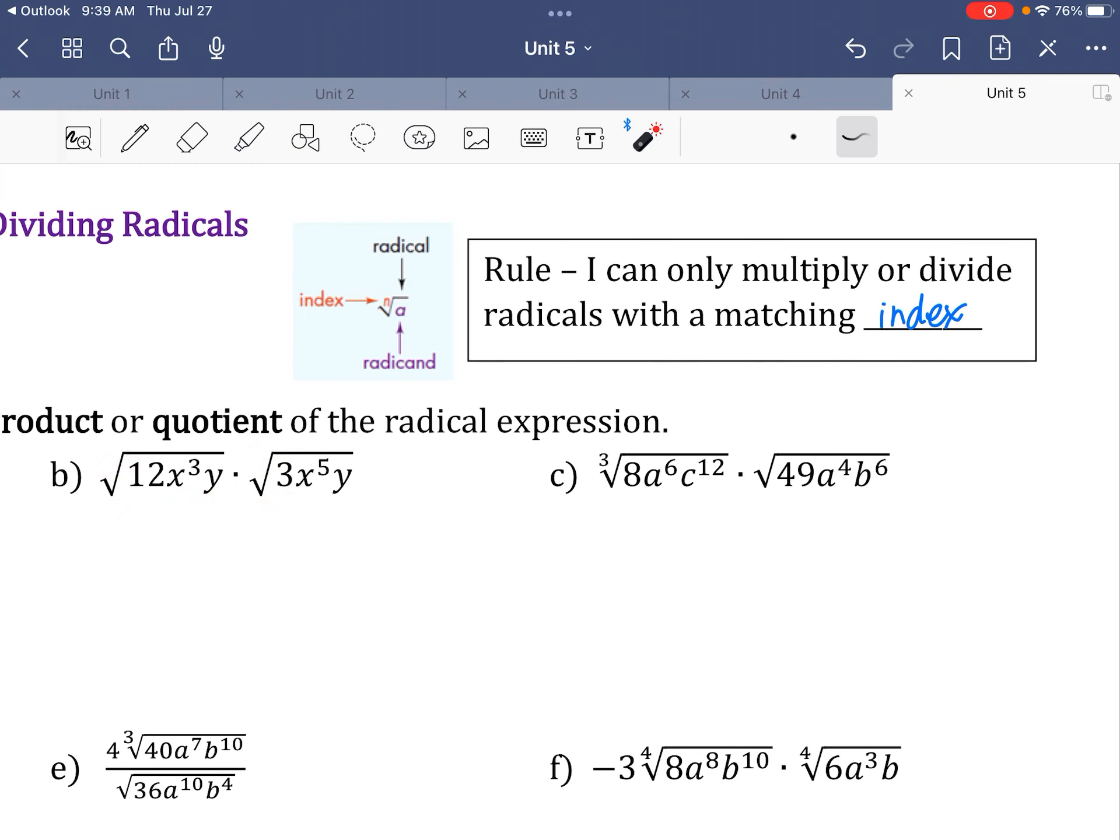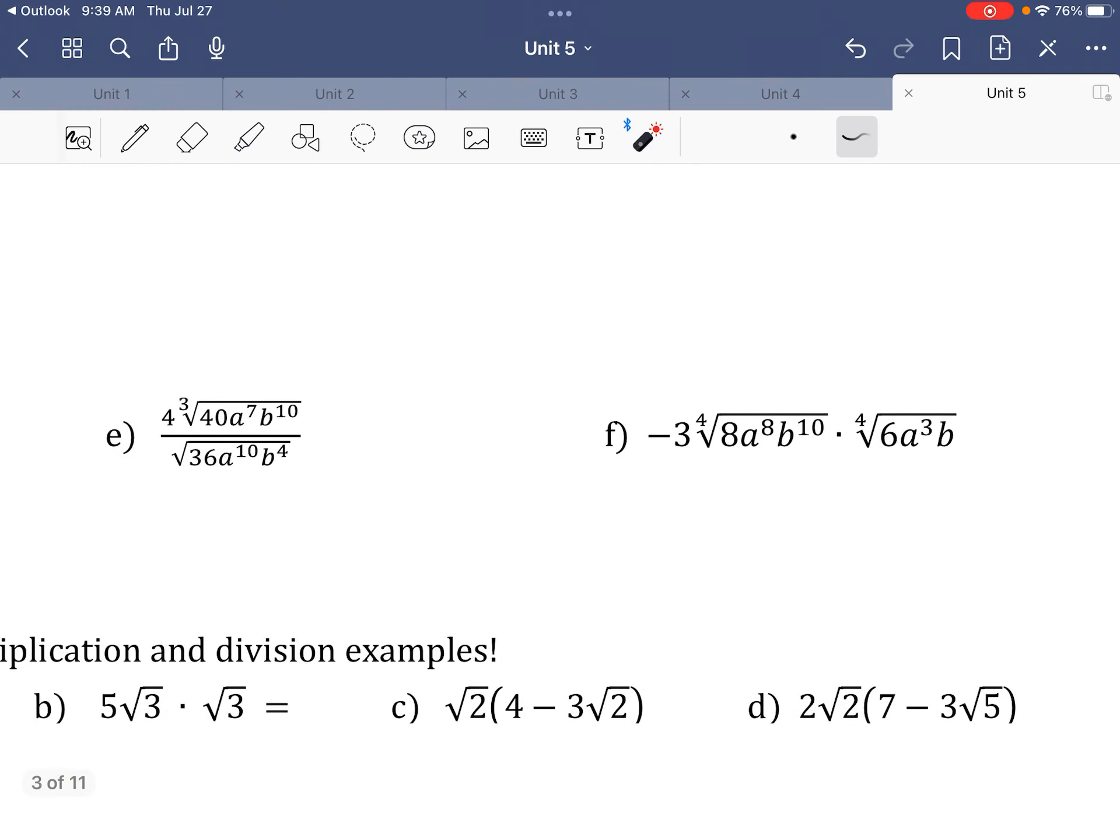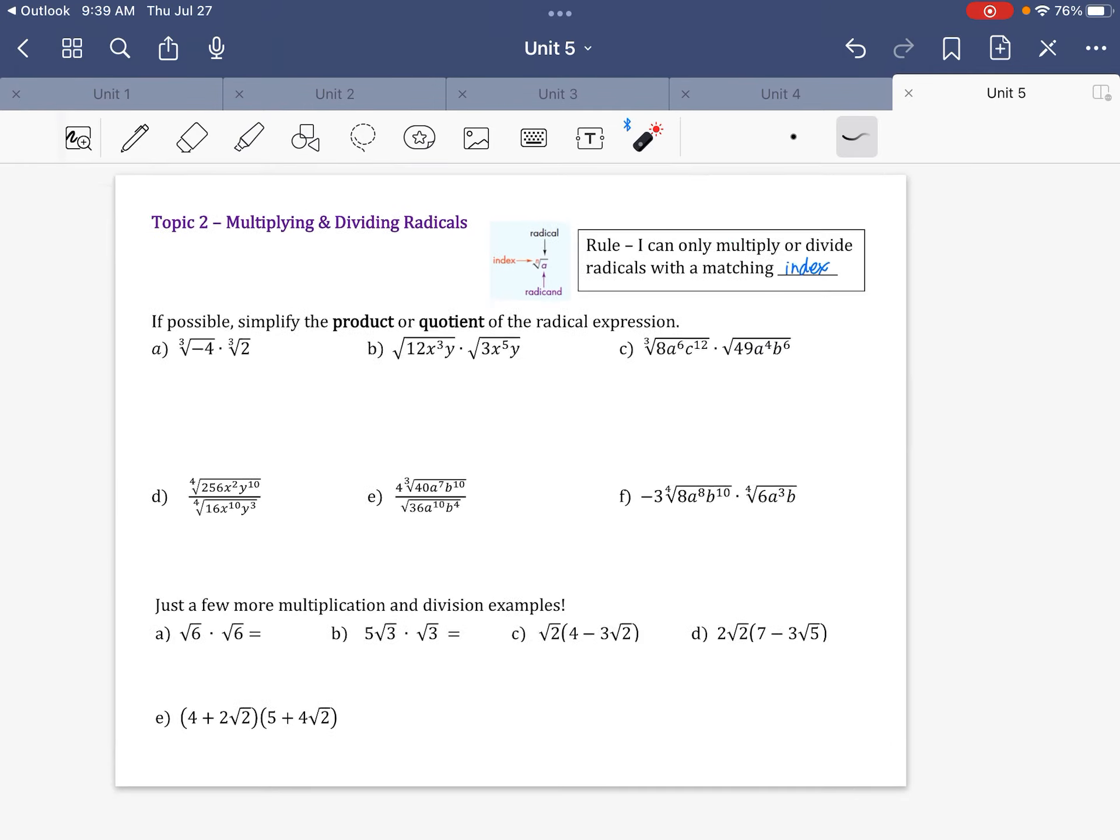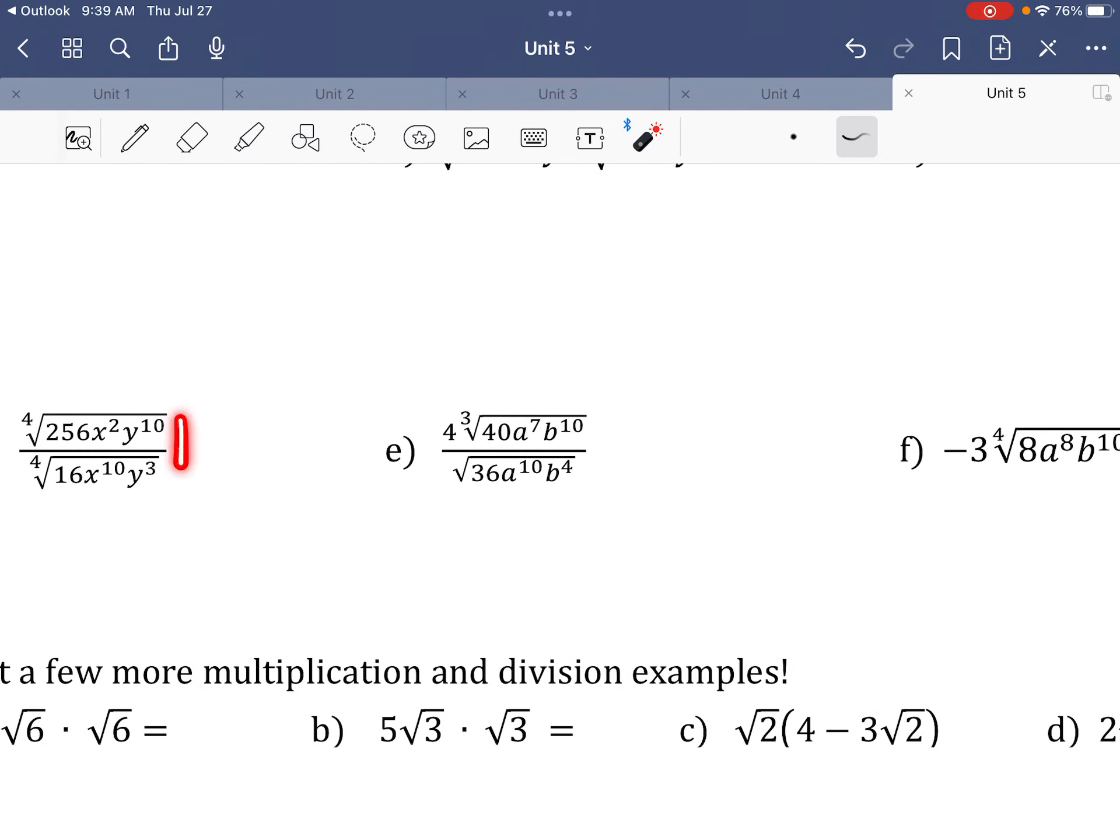But, like here, you see these are both square roots, so I can put these together and I can mush them together into one big square root, okay? Here, I can put these together. I have negative three. I put one big fourth root, and then have all that stuff inside, and then I reduce it and whatnot, okay?